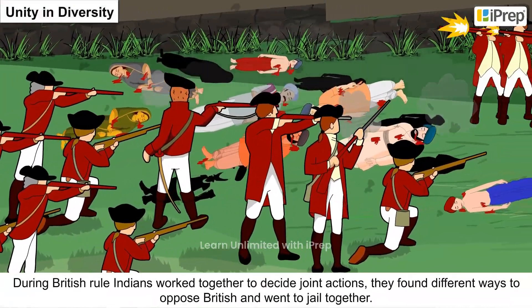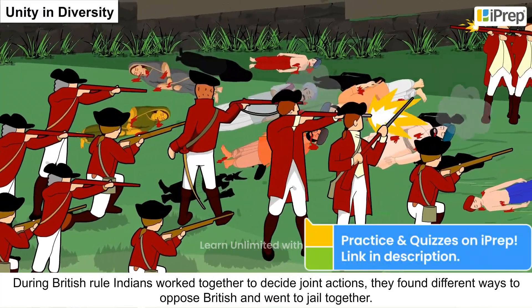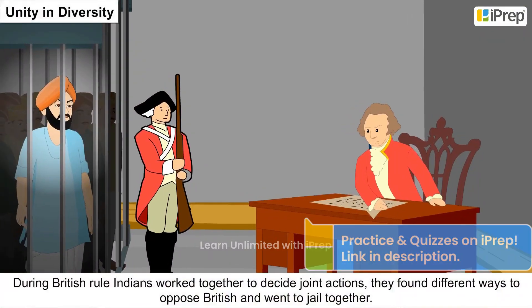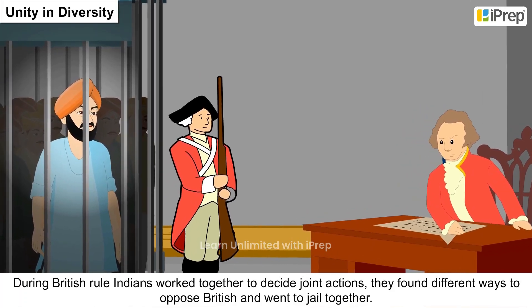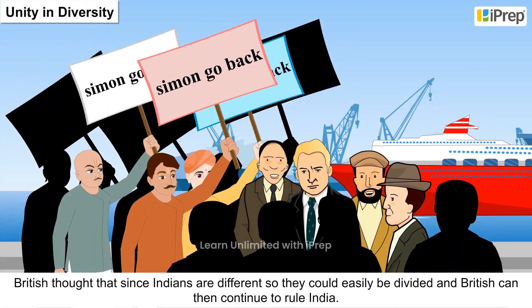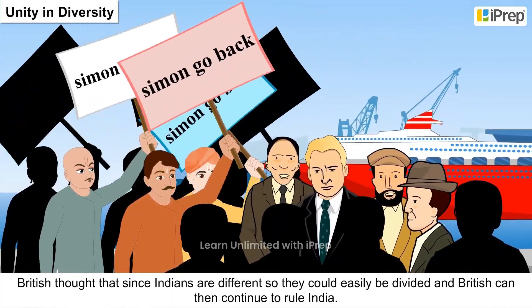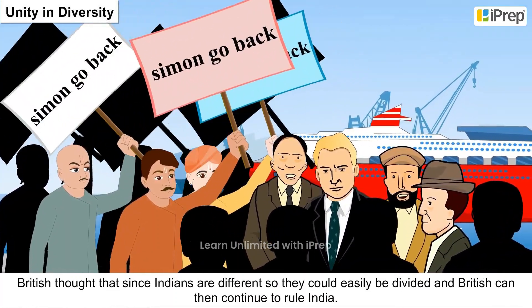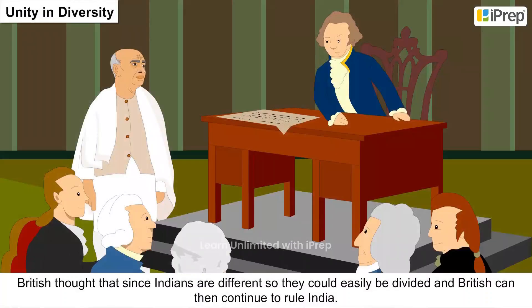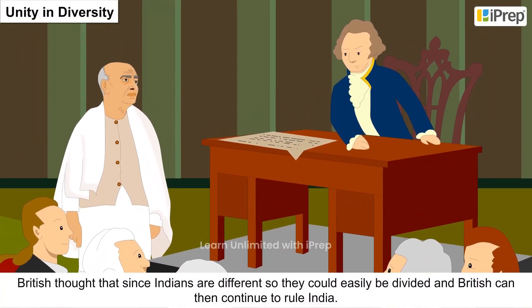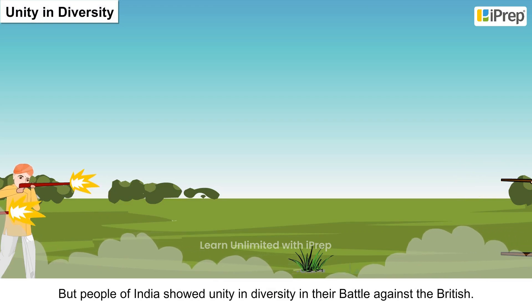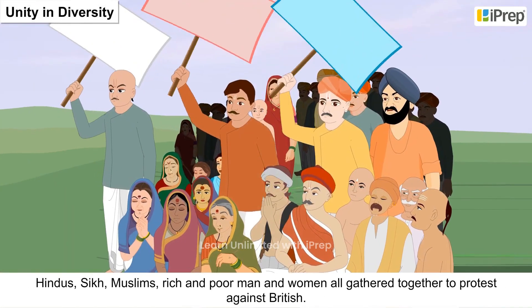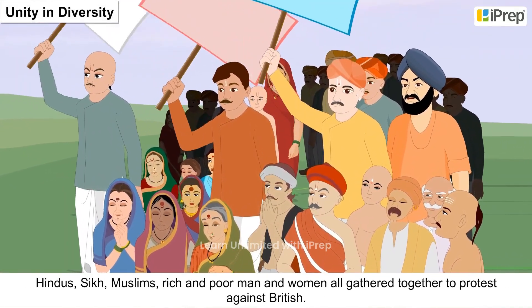During British rule, Indians worked together to decide joint actions. They found different ways to oppose the British and went to jail together. The British thought that since Indians are different, they could easily be divided and continue to rule India. But the people of India showed unity in diversity in their battle against the British.